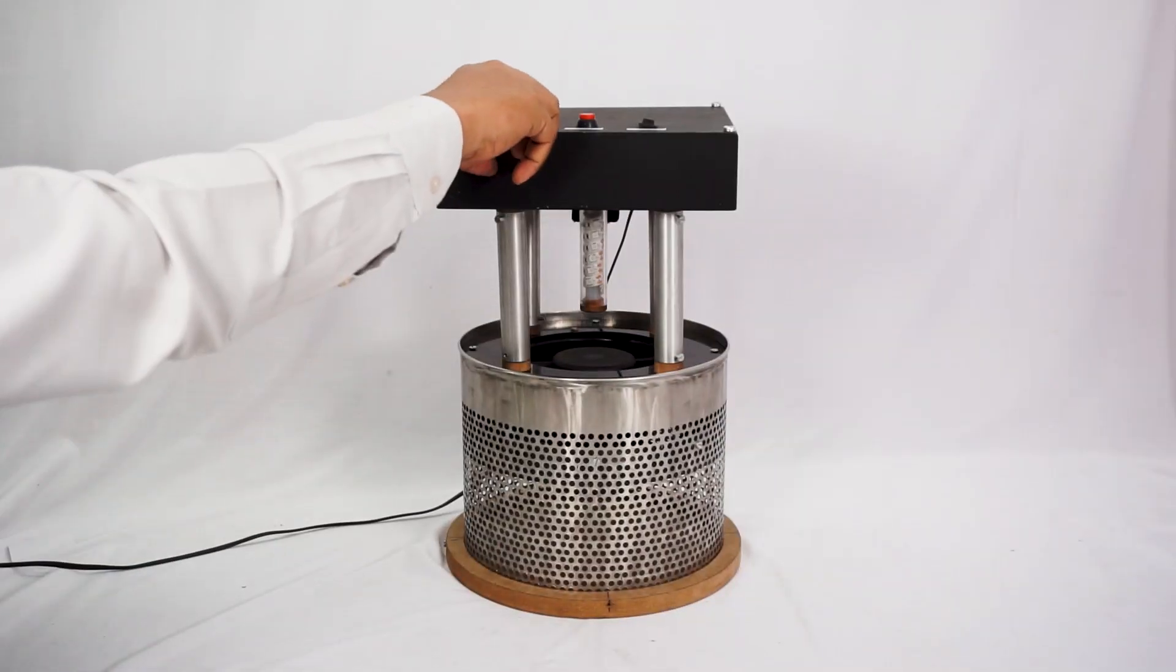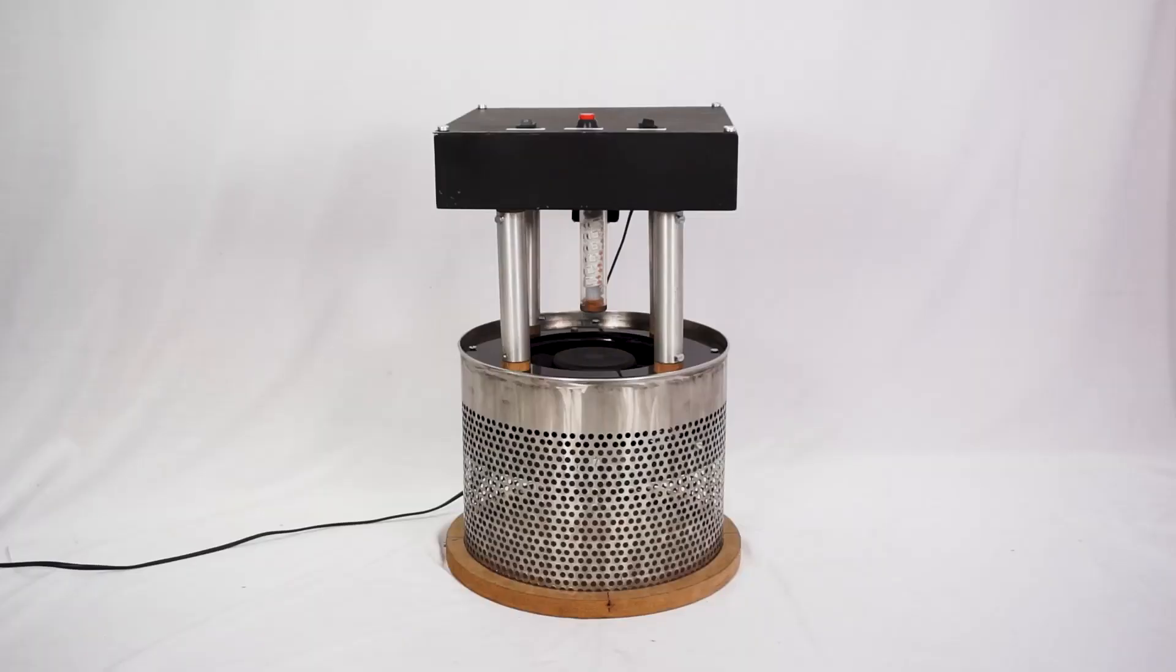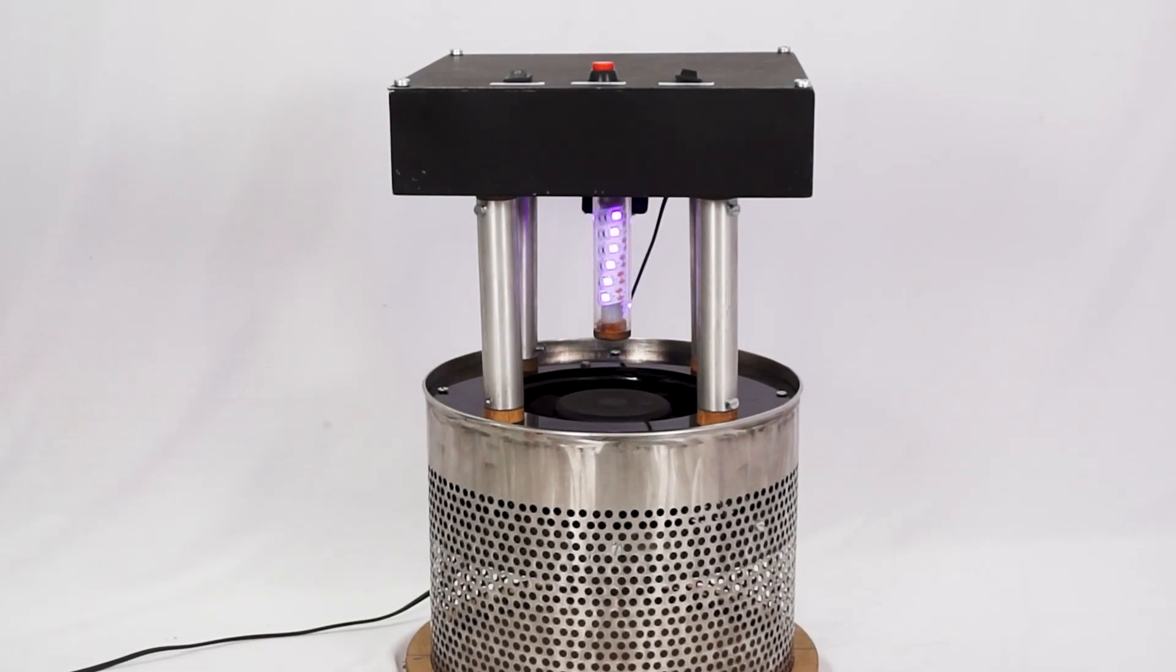Here we turn on the mosquito killer machine and this blue light turns on in the center. This is an additional attraction used to attract mosquitoes.